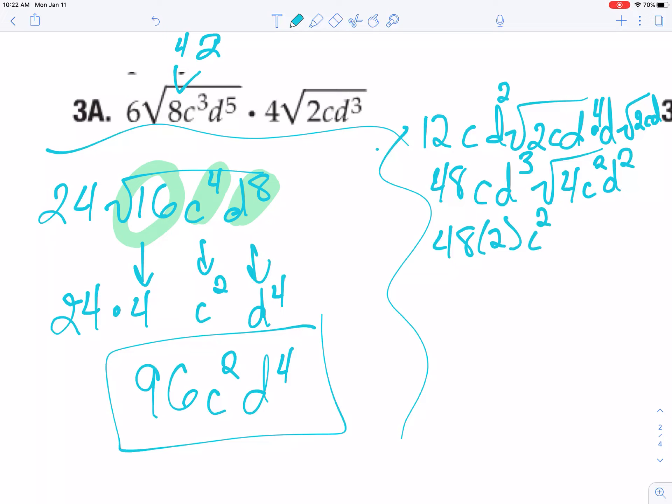Since you have two c's now, that's d squared. And pull out a d, and now you have four of those.